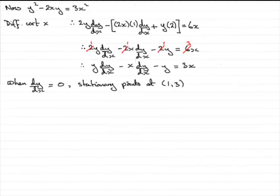Hi, welcome to the last part in this series on finding stationary points, where we had an implicit equation for a curve, y squared minus 2xy equals 3x squared.